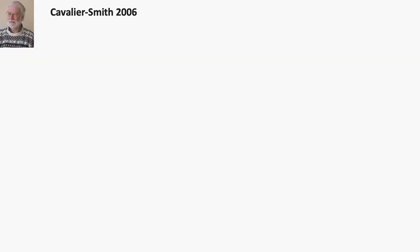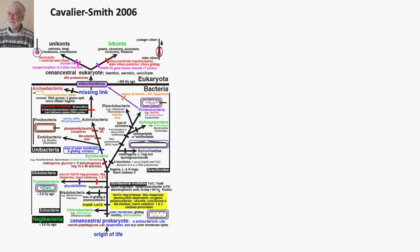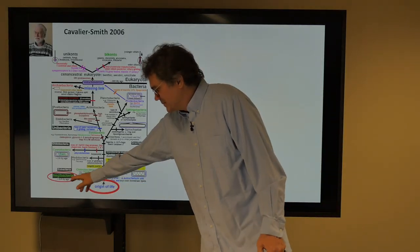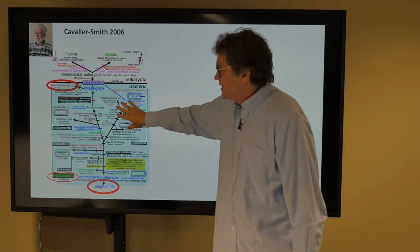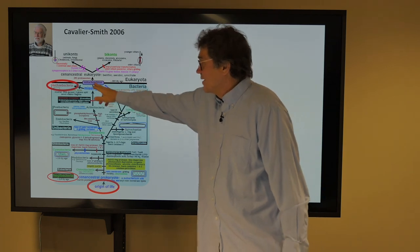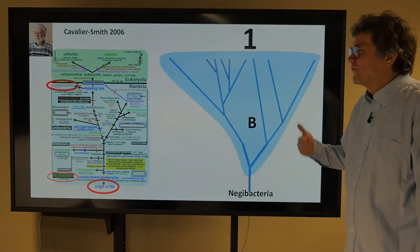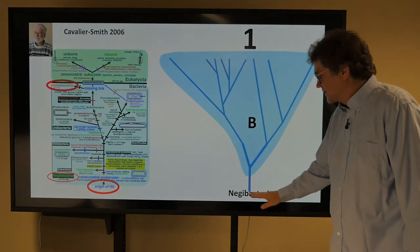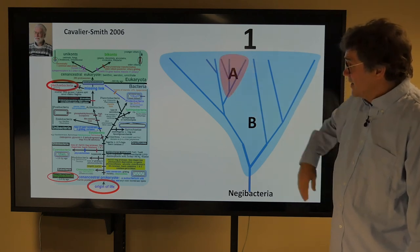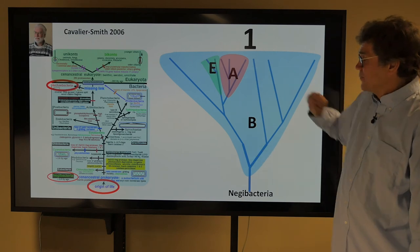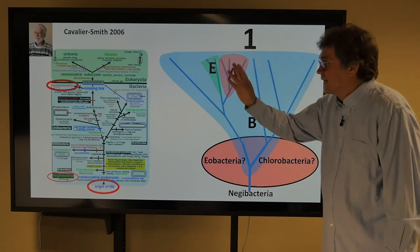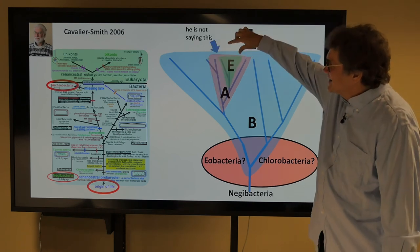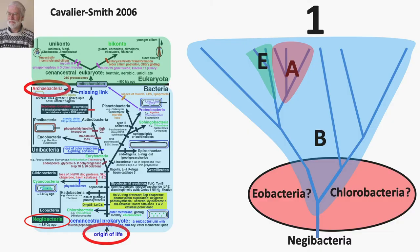Here's Cavalier-Smith in 2006 with a wonderful but really complicated paper — a real confusagram. Down here is the origin of life with some negibacteria. Here are the archaea, and all of these are bacteria. So the archaebacteria are a type of bacteria, and out of them, with the mitochondria, come the eukaryotes. If we simplify: negibacteria down here, all of bacteria here, then archaea coming out, then eukaryotes. So really we have just one domain and then two subdomains. He's not saying bacteria are here and eukaryotes inside the archaea — no, he's saying they're separate.